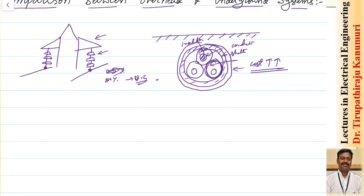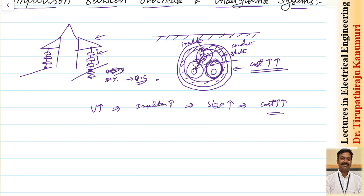Coming to working voltage: in underground cable, the voltage is between two conductors, which is the line voltage. In overhead lines, the voltage is between the conductor and the tower, which is the phase voltage. As voltage increases, the thickness of insulation required increases, so the cable size and cost increase drastically. Whereas in overhead lines we just add more insulators and increase tower height slightly, so the extra cost for higher voltage is much less.